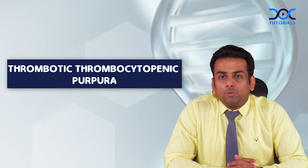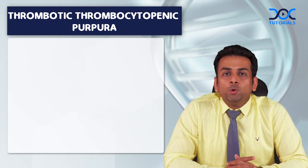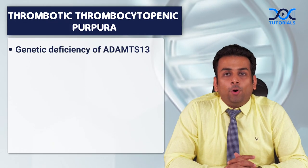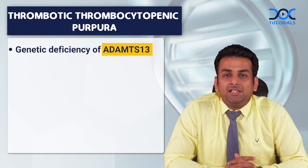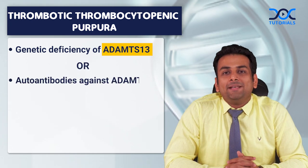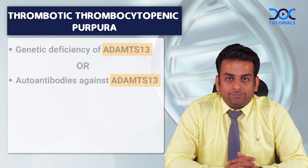Hello everyone, welcome to Super Learning Bites at Doc Tutorials. Thrombotic thrombocytopenic purpura is due to either the genetic deficiency of ADAMTS-13 or autoantibodies against ADAMTS-13.